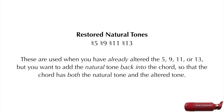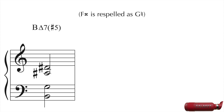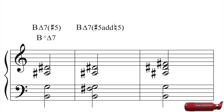Restored natural tones are used when you have already altered the 5, 9, 11, or 13, but you want to add the natural tone back into the chord so that the chord has both the natural tone and the altered tone — I call this the restoration of the natural tone. For example, here we have a B major 7 sharp 5, which is the same as B augmented major 7. Since the 5 is altered, this chord doesn't contain the natural 5. But if we add the natural 5 into the chord, we now have B major 7 sharp 5 add natural 5. You could also write this as B augmented major 7 add natural 5.